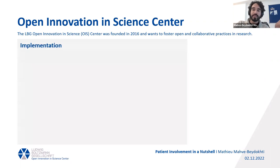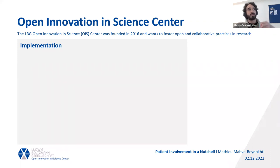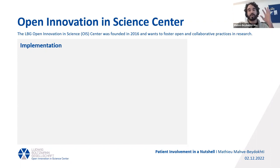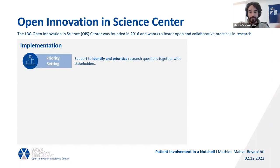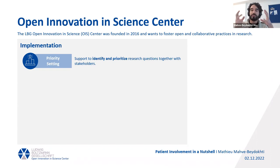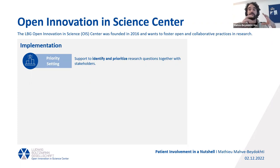We have two teams: the implementation and the research team. I am part of the implementation team, where it's really about how we can bring the involvement aspect and open practices into different research projects. We have different categories, for example priority setting — which is about the research question at the beginning of a project — where we give consultation and training on how to involve patients already at this crucial stage.